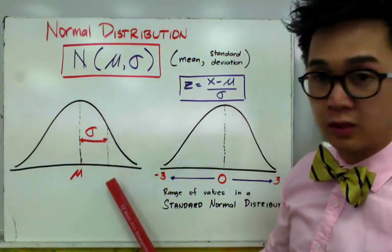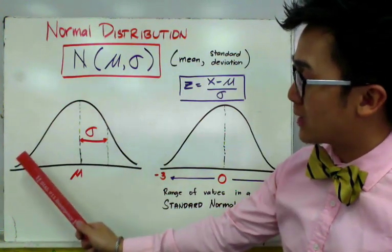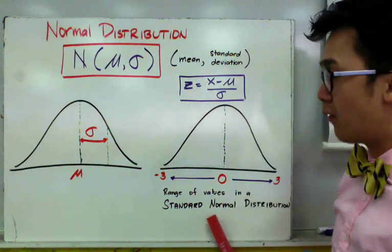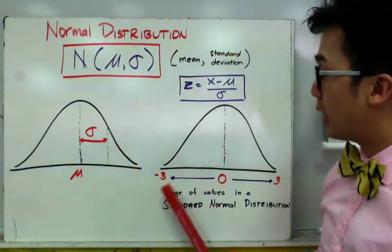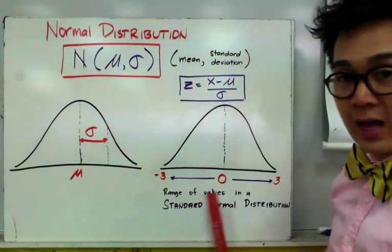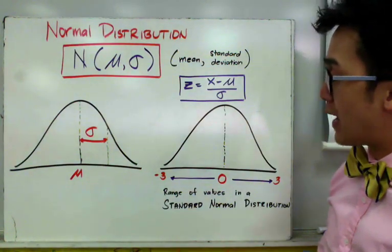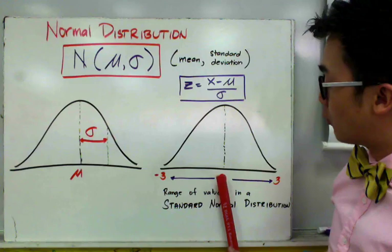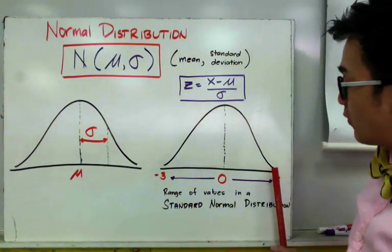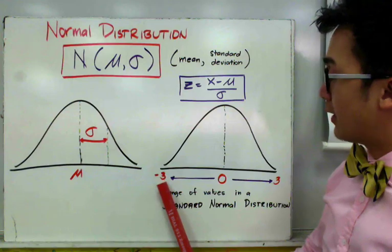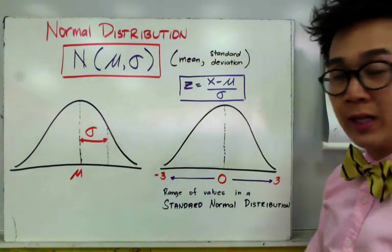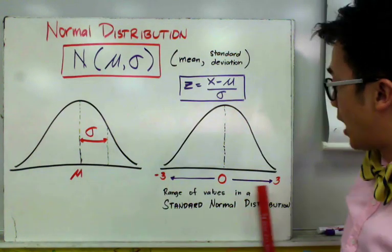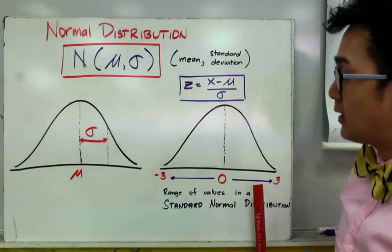The normal curve is bell-shaped and symmetrical. For today we're going to use a standard normal distribution, which is similar to this curve. However, we are now going to use a standardized value with a specific range. Think of our values as a number line where the center is zero, with the left and right sides of the distribution given by negative 3 and positive 3. So the range of values in a standard normal distribution is from negative 3 to positive 3.